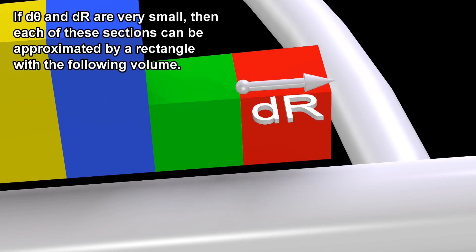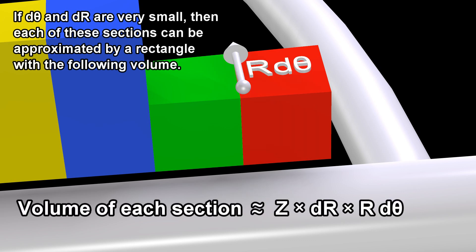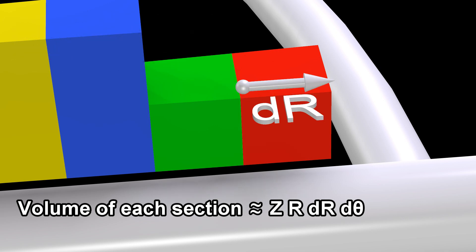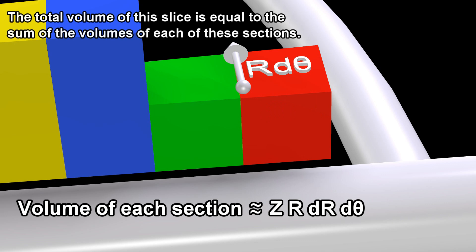If dθ and dR are very small, then each of these sections can be approximated by a rectangle with the following volume. The total volume of this slice is equal to the sum of the volumes of each of these sections.